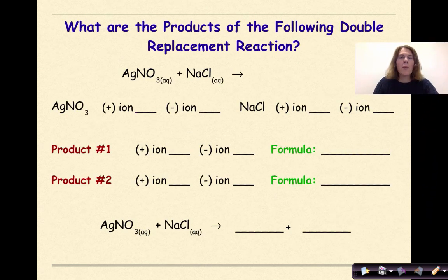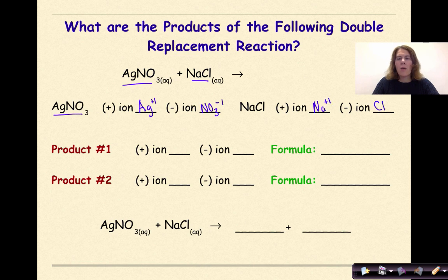Let's look at an example. What are the products of the following double replacement reaction? We are dealing with silver nitrate and sodium chloride. So the first thing that you are going to do is take your two reactants and break them down into their positive and negative ions. So AgNO3 will be broken up into Ag+ and NO3-. NaCl will be broken up into Na+ and Cl-.